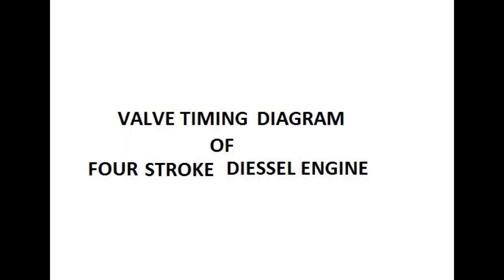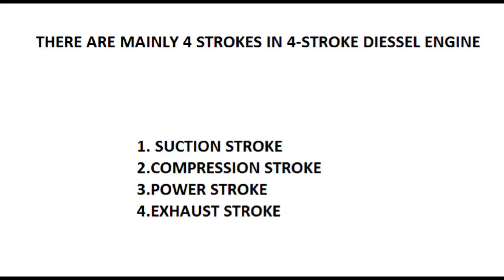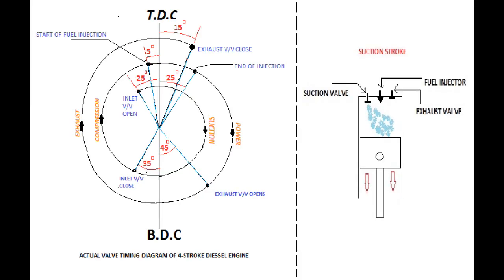Valve Timing Diagram of Four Stroke Diesel Engine: There are mainly four strokes — suction stroke, compression stroke, power stroke, and exhaust stroke. Suction Stroke: This starts when the piston travels from top dead center to bottom dead center. Theoretically, inlet valves open from top dead center to bottom dead center for 180 degrees.